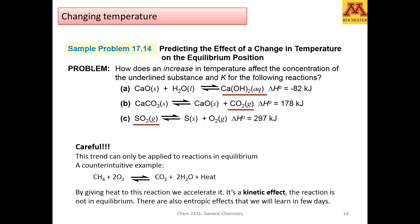Let's see if we can understand this with an exercise. If we increase the temperature for these three reactions, how does it affect the concentration of the underlying substances? Reaction A is exothermic, so think of heat as if it were a product. If we increase the temperature and heat is a product, the reaction will try to counteract by moving towards reactants, so the concentration of CO₂ and the other substance will decrease.